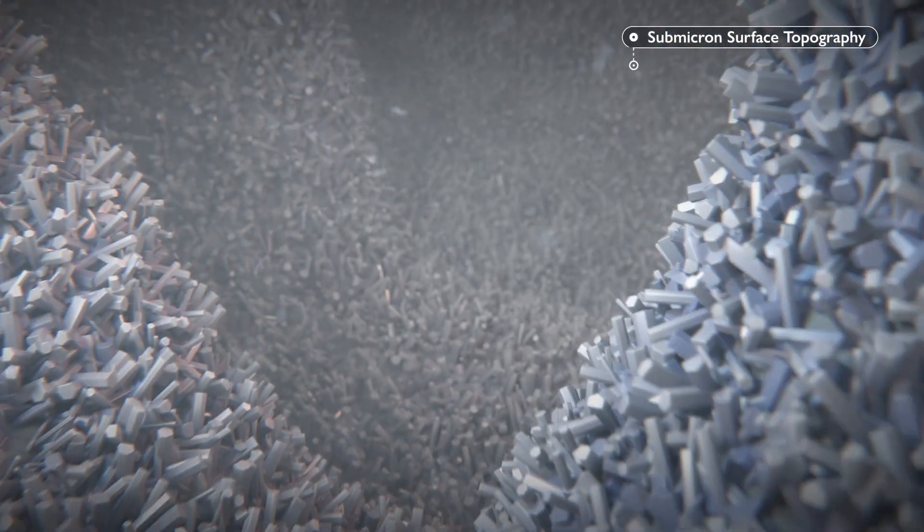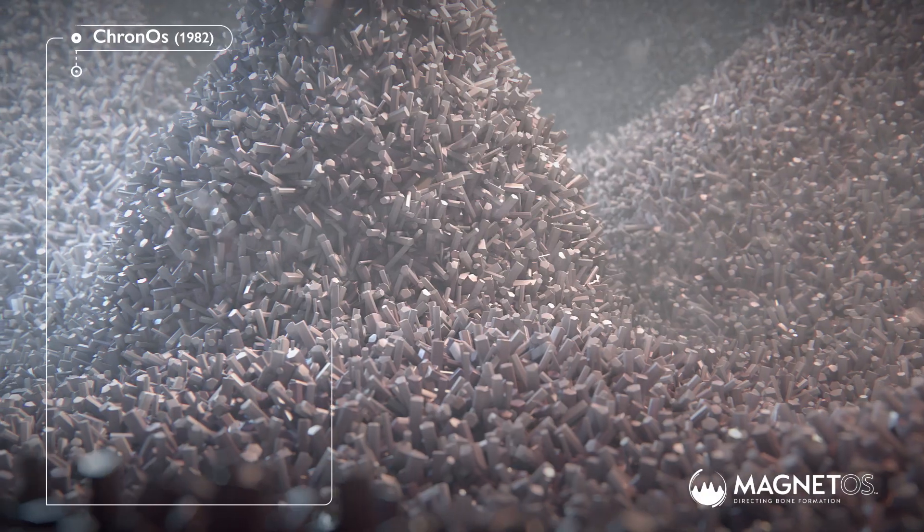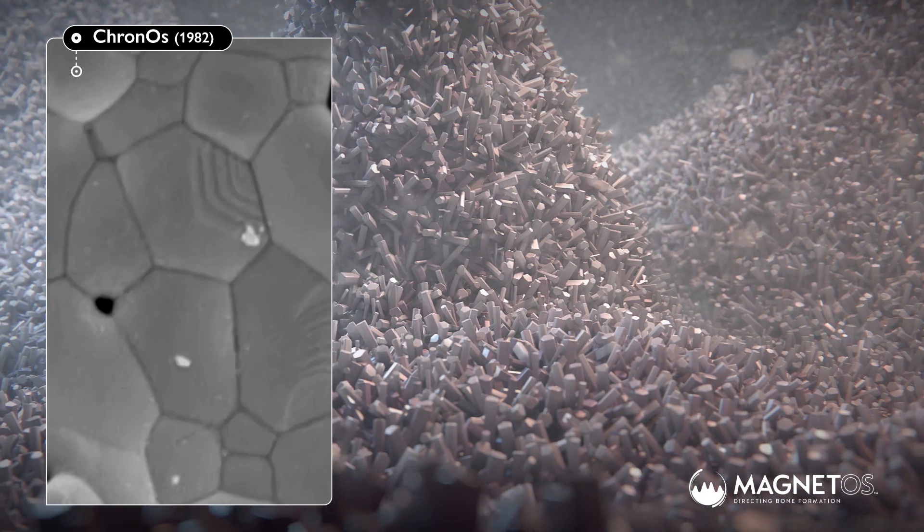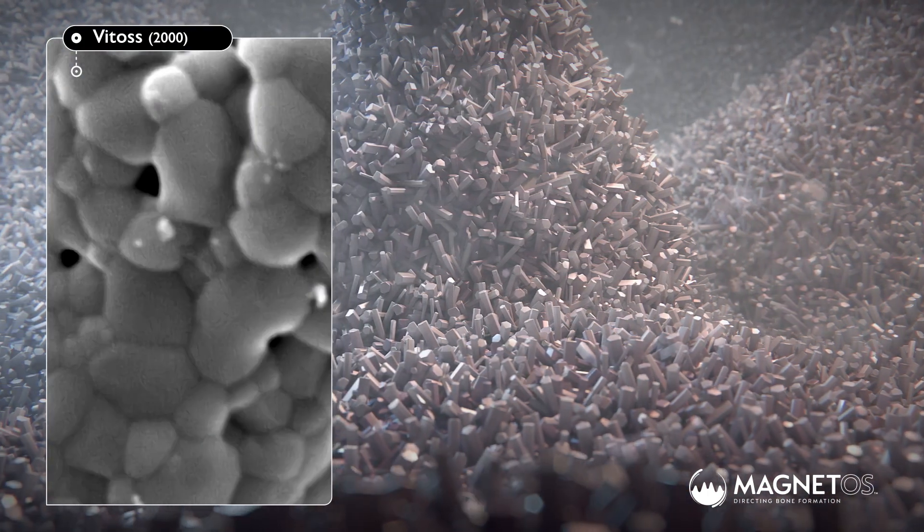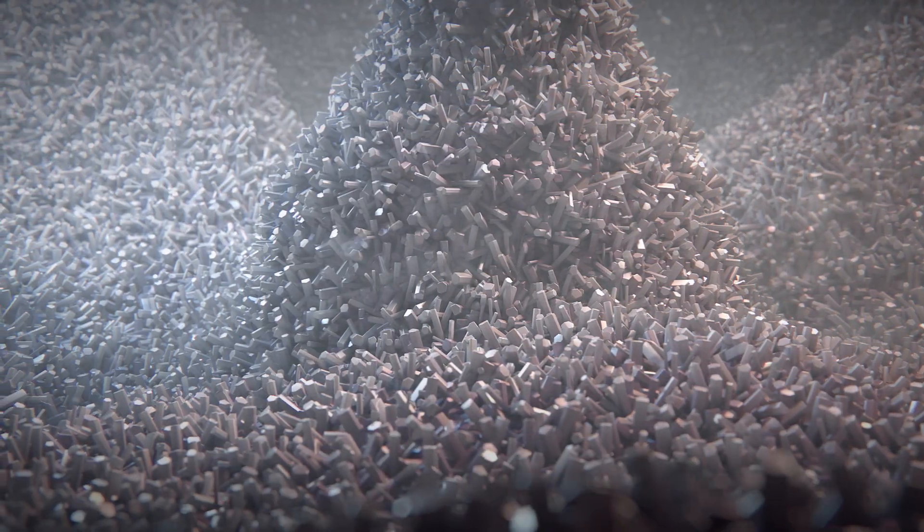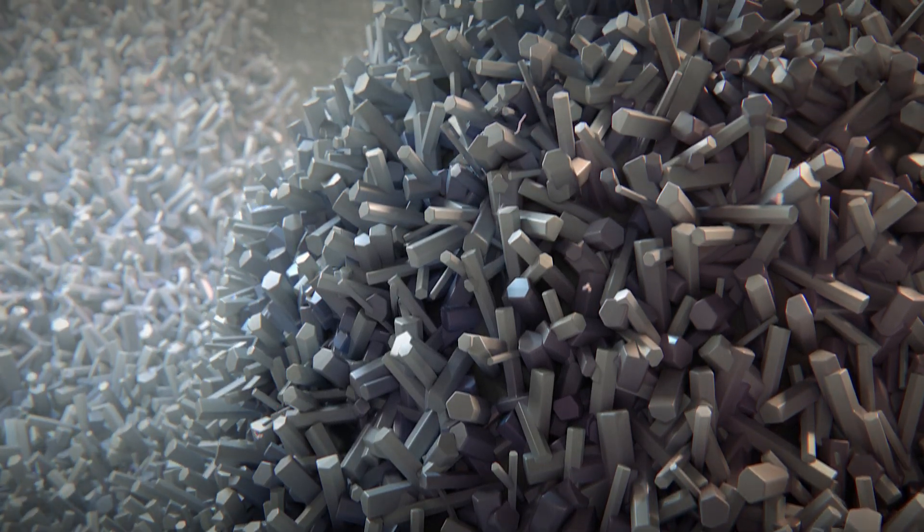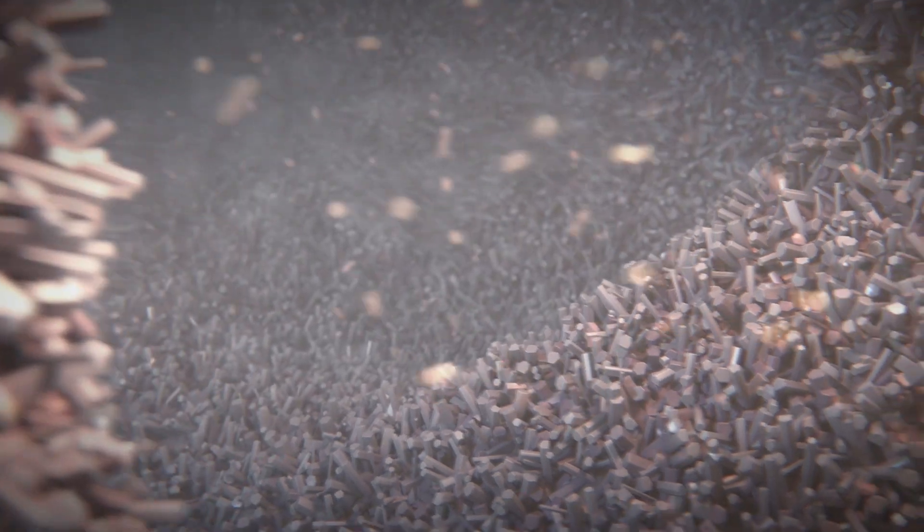Magnetos Granules are designed to mimic the porous trabecular structure of cancellous bone. Unlike first-generation bone grafts with conventional surface architecture, the advanced surface of Magnetos has needle-shaped features that are submicron in size and ideal for the attachment and spreading of macrophages.